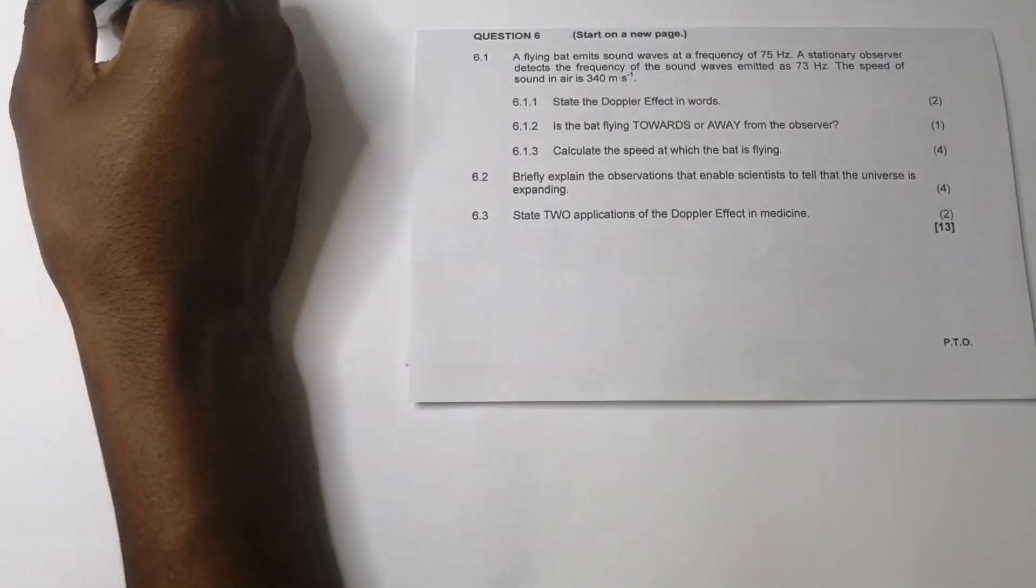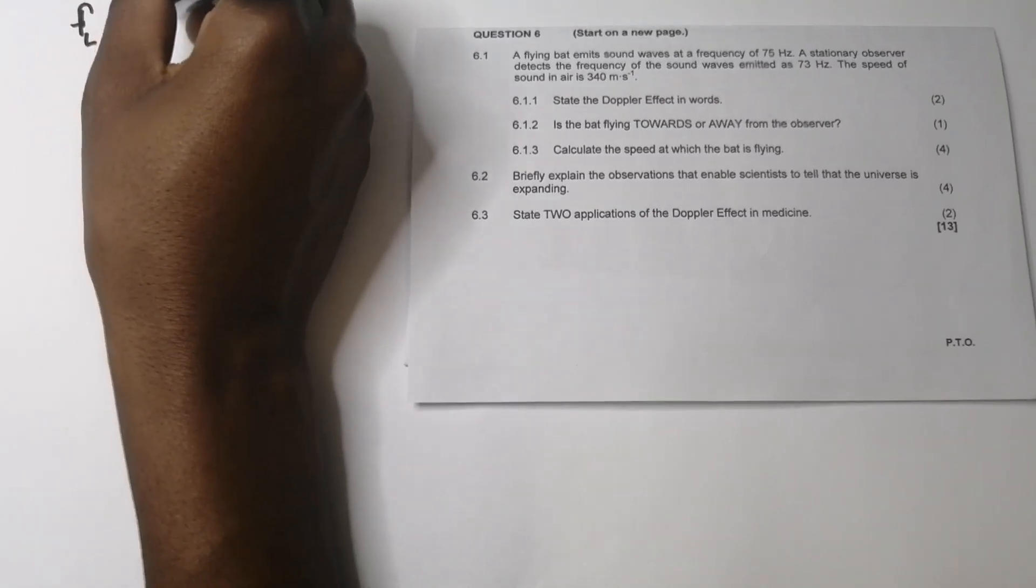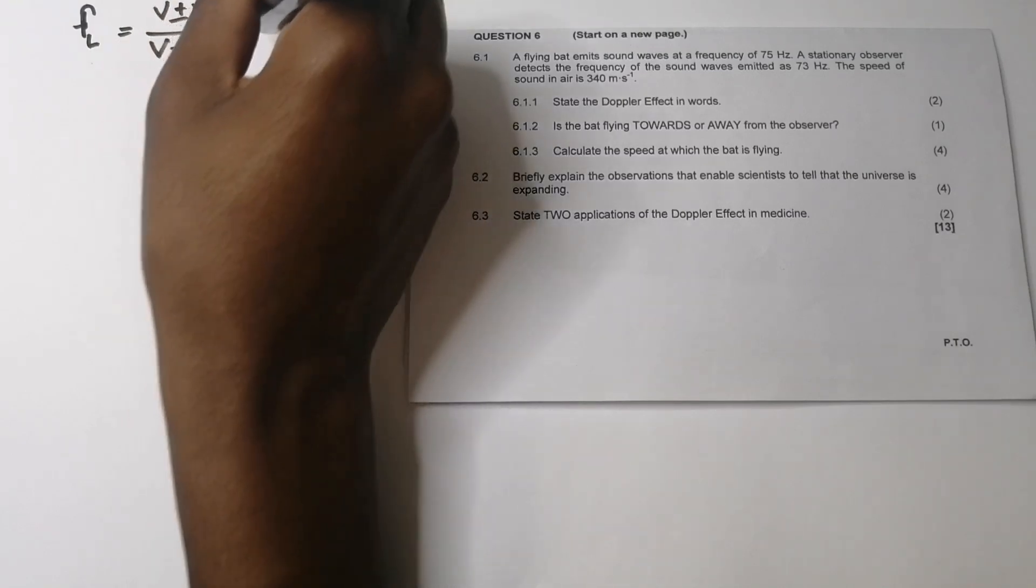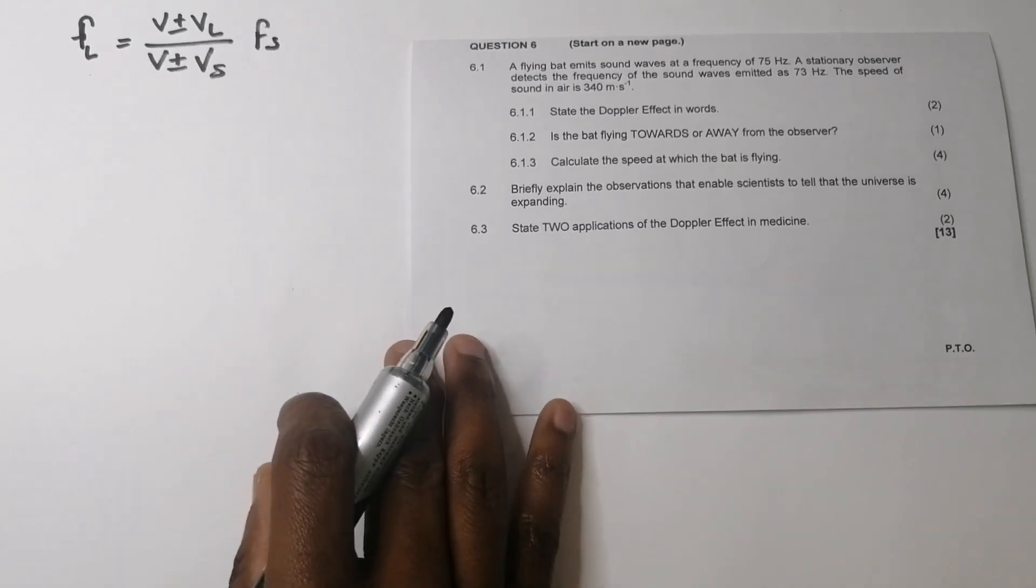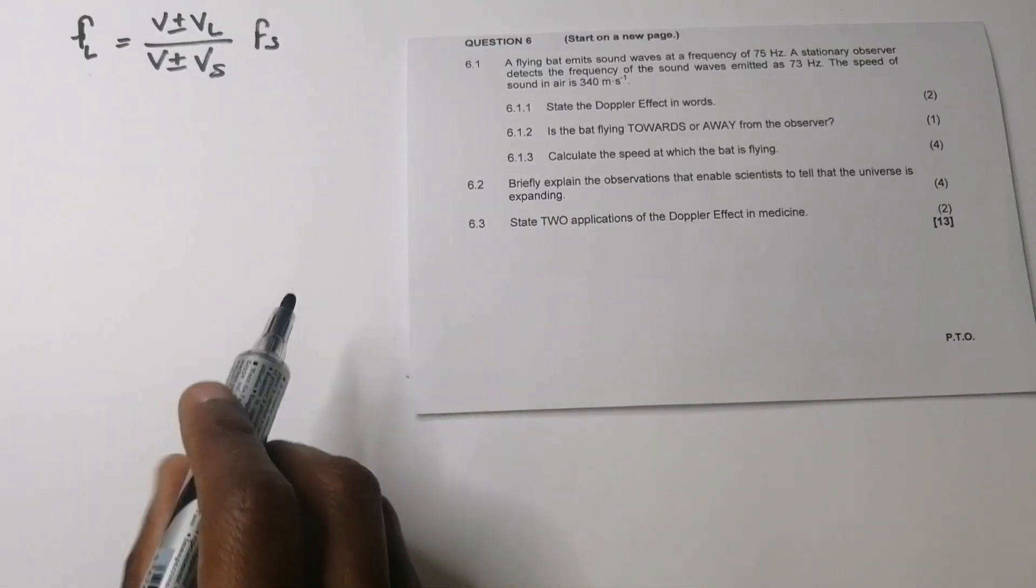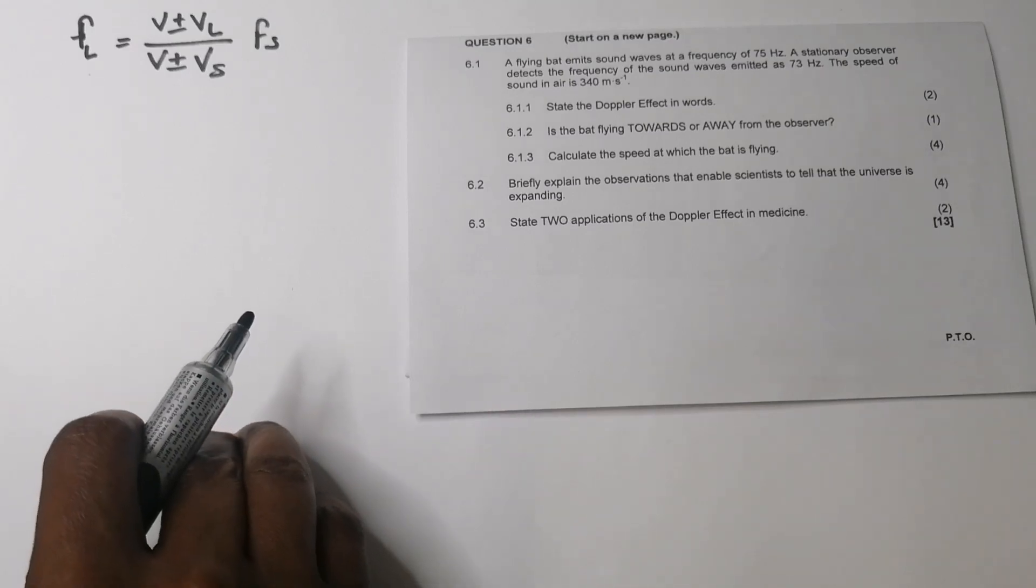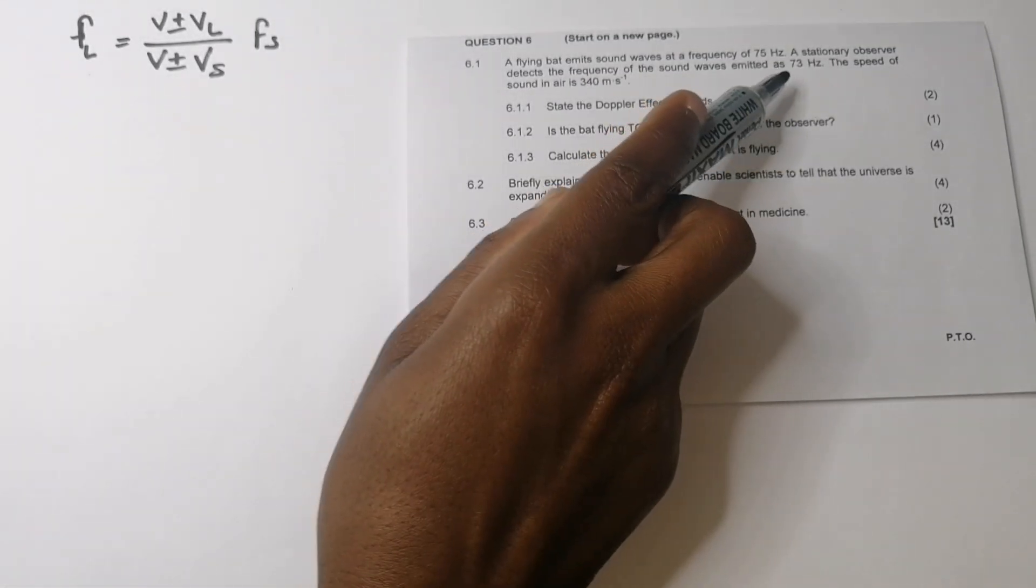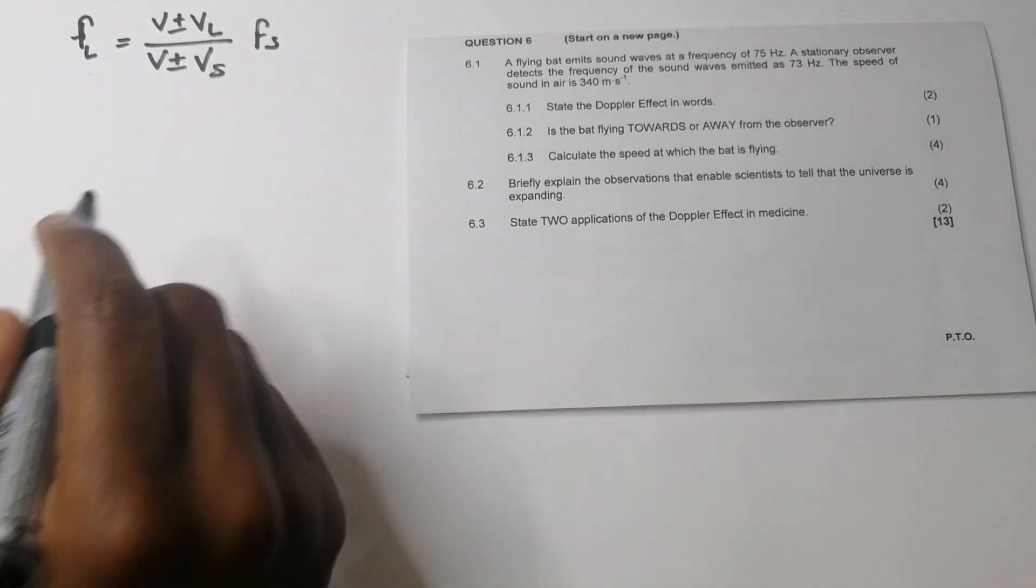So what are we going to do? We say, well, let's apply the Doppler effect. So the equation simply says the frequency of the listener, that's V plus minus VL, V plus minus Vs, over multiplied by Fs, the frequency of the source. So now we know we are looking for the speed at which the bat is flying. Remember, the bat in this case is the source.